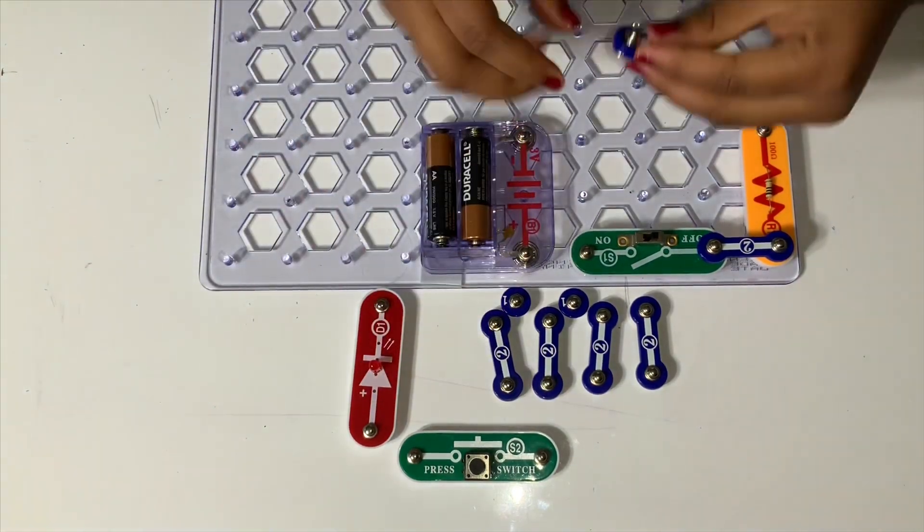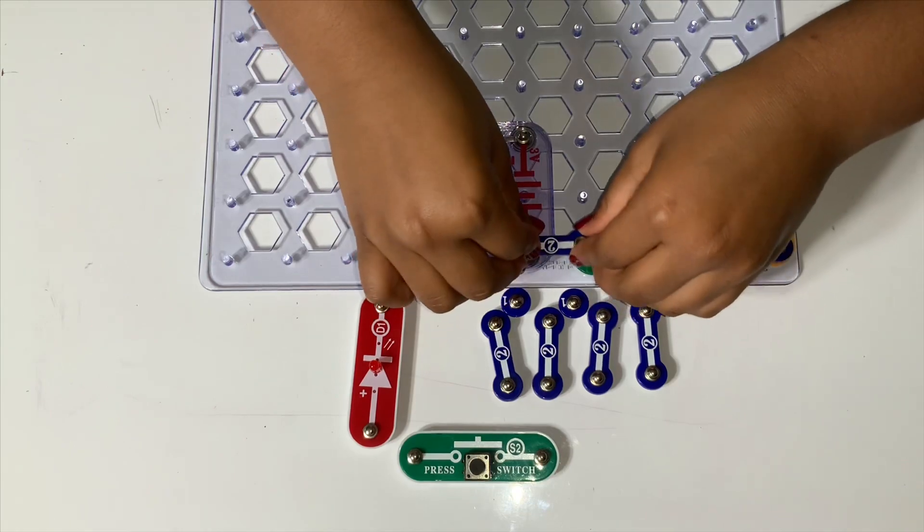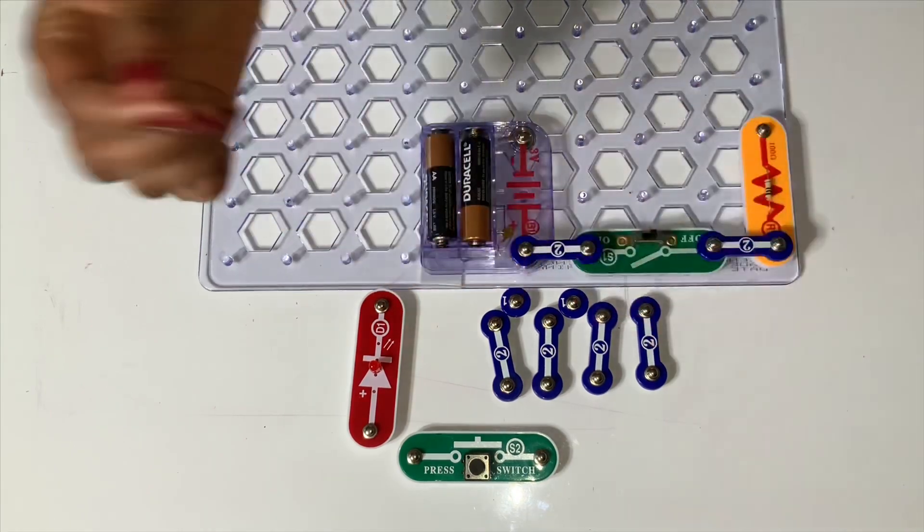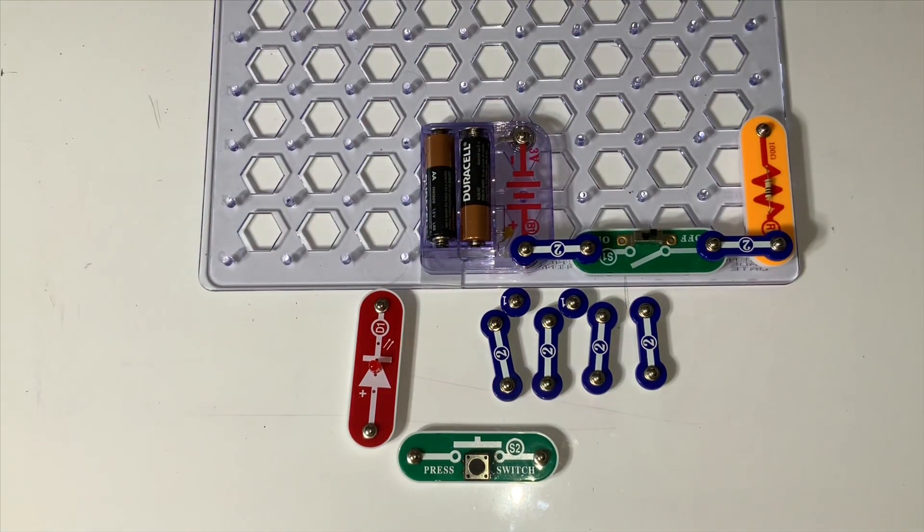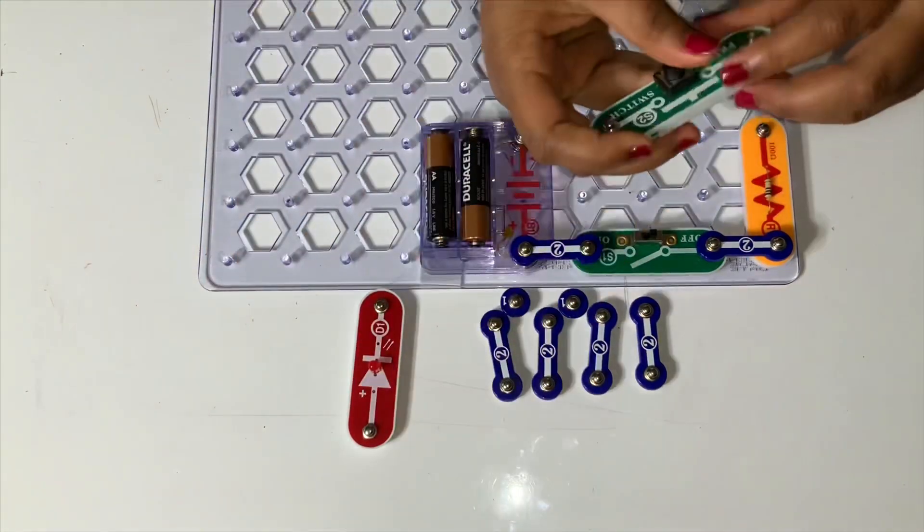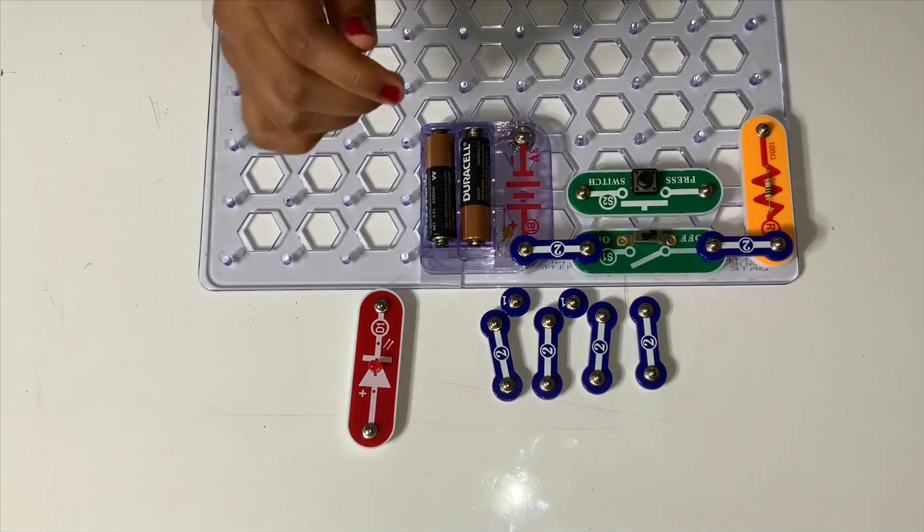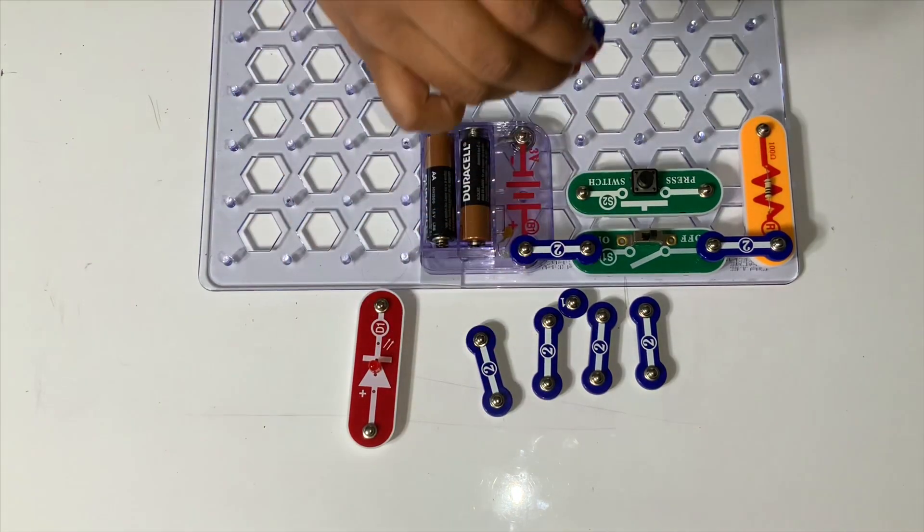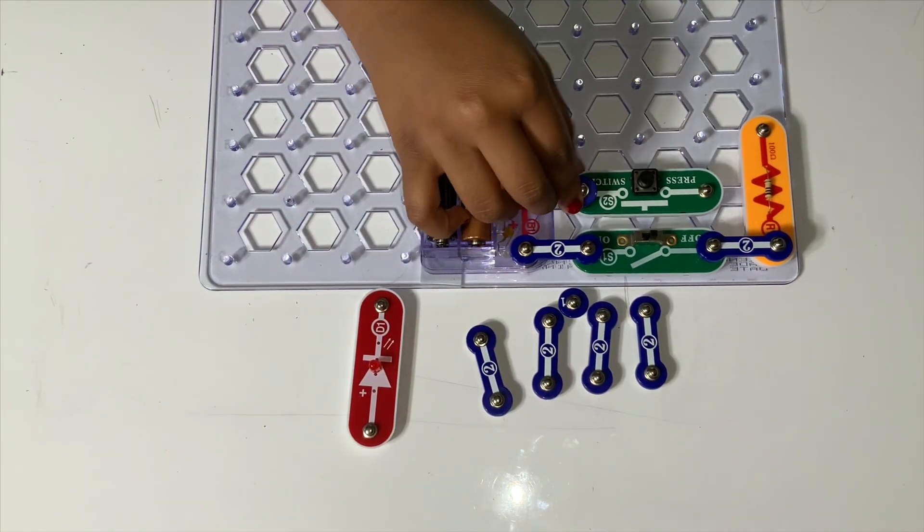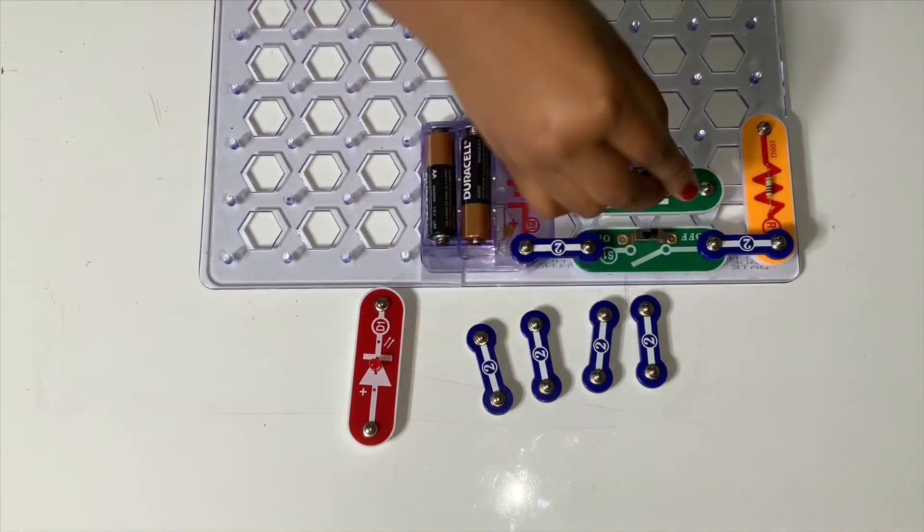Now, add this two snap wire in the gap. Now, we have to take the press switch and put it over here. Now, we're going to take the one snap wire and place it over here. Same with the other one snap wire.